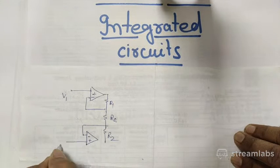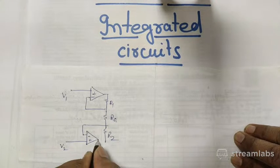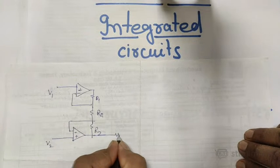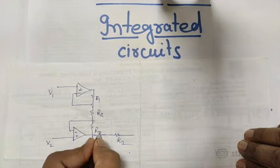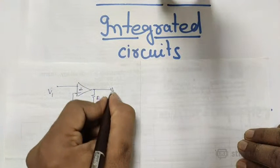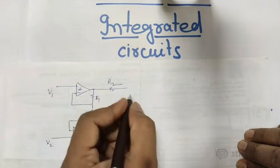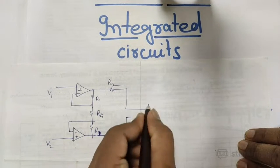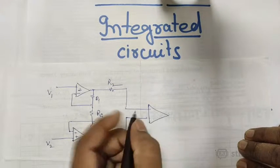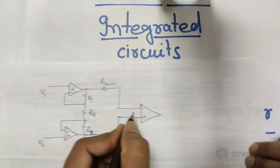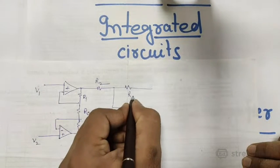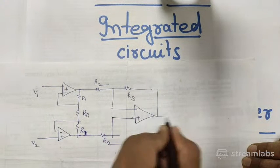The output is connected here, and R2 again goes back — this is R1, R2 at this point and R2 at this point. This is a standard instrumentation amplifier circuit, and to derive its output voltage could have been straightforward.